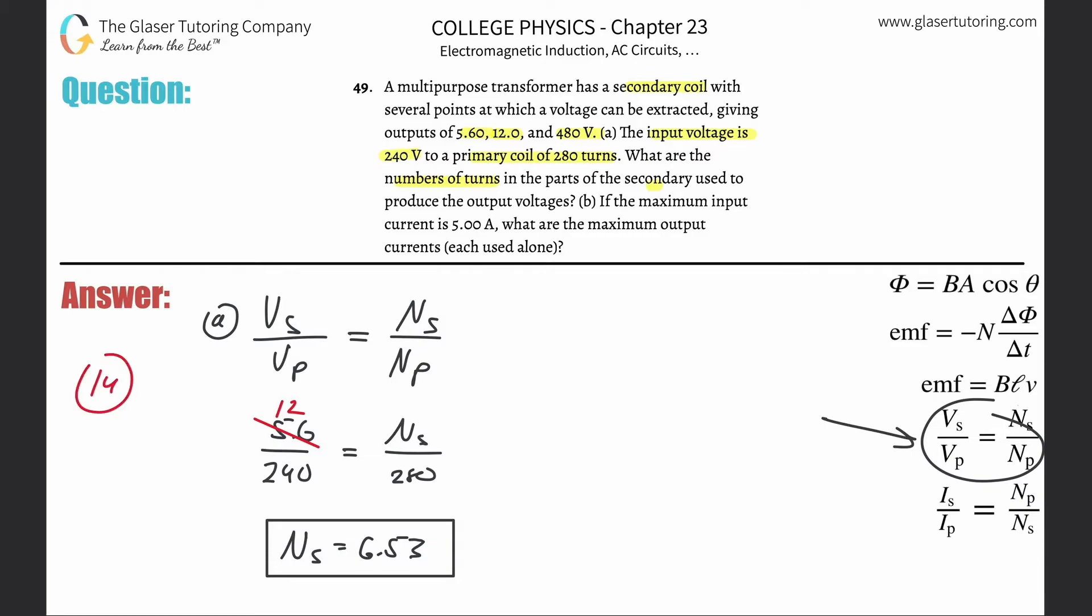And then in blue, we'll do the four. This will be 480 now. So 480 times 280 divided by 240. And we're going to need 560. So that takes care of that. So those are those answers.